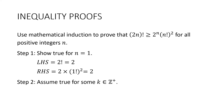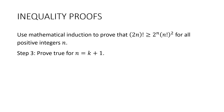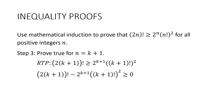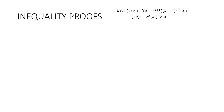Step two: assume it's true for some k that is a positive integer. Substituting into our expression, I find it easier to bring whatever's on the right hand side over the other side and try and prove greater than or equal to zero. Step three: prove true for n equals k plus one. We want to prove that (2(k+1)) factorial is greater than or equal to 2 to the k plus one multiplied by ((k+1) factorial) squared. Again, I'm going to take that over the other side and prove it greater than or equal to zero.